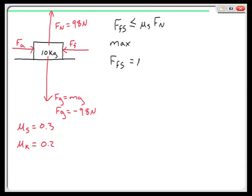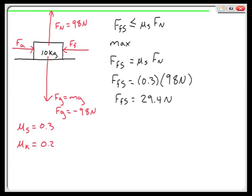I'll plug in the numbers that I know. This is going to be 0.3, that's a unitless number, times 98 Newtons. My friction force is going to come out to be 29.4 Newtons. That shows me the magnitude of my friction force. I have to use my free body diagram to decide the actual direction of it.